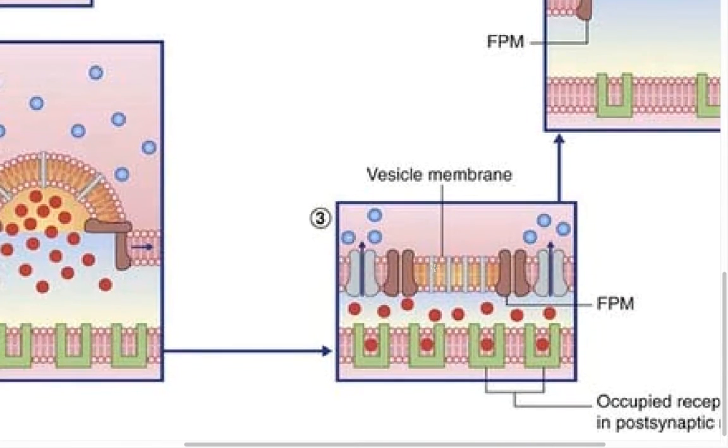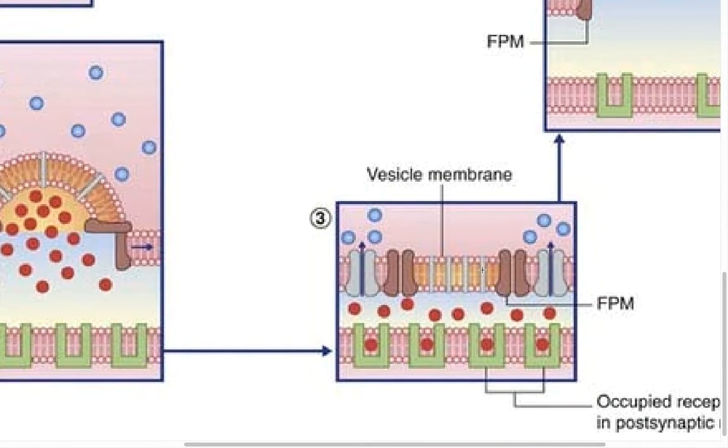Once this happens, you see here that the vesicle has completely disappeared with the help of the FPMs, and it's become part of the presynaptic membrane, as you see. And now your neurotransmitters are binding to the receptors, or floating around in the synaptic cleft, doing whatever they do. At this point, your vesicle is completely part of the presynaptic membrane.